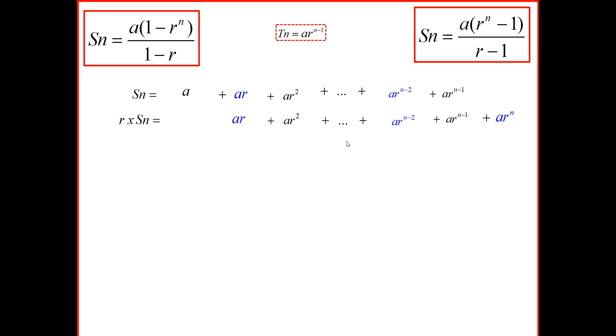So the next thing we're going to do is we're going to subtract the terms. So what is Sn minus r times Sn? So a minus 0 is a. ar minus ar is 0. ar squared minus ar squared is 0. So that pattern continues up till the end. Remember we have on the top here 0 minus ar to the power n, which is negative ar to the power n. So Sn minus rSn is equal to a minus ar to the power n.